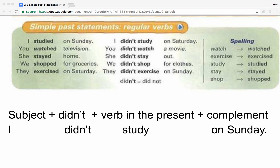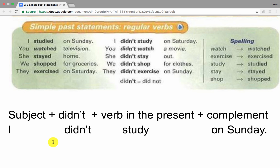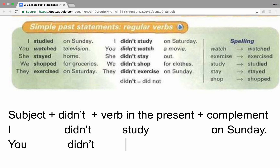Let's analyze one last example. You didn't watch a movie. First, we will add the subject — you. Next, we will include the auxiliary verb to make negative statements — didn't. After that, we add the verb in the present tense — watch. Finally, we will add the complement — a movie.